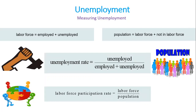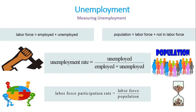The labor force participation rate is the ratio of the labor force to the total population 16 years old or older — so it is labor force divided by the population. One important measure that economists consider beside the unemployment rate is the duration of unemployment, which represents the length of time that persons classified as unemployed had been continuously looking for work.